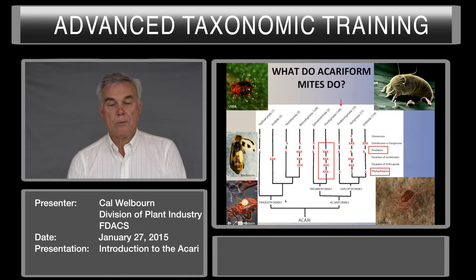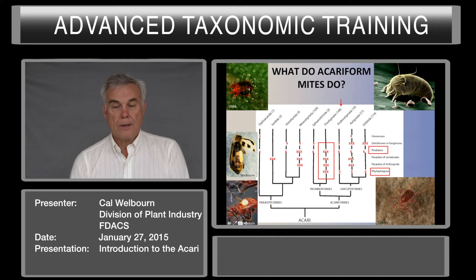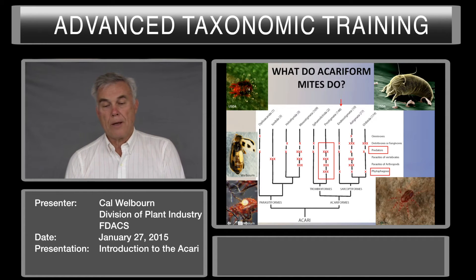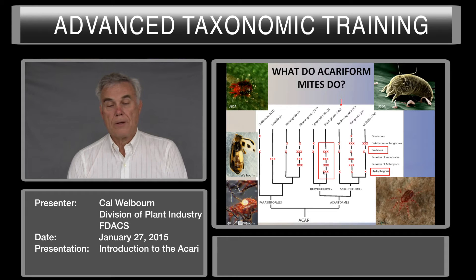What do acariformes do? There are some that are omnivores. Many are detritivores and fungivores. Some are predators, but when we get to the Prostigmata, there are a lot of predators. Some are parasites of vertebrates and parasites of arthropods. Some of the Astigmata are parasites of arthropods and vertebrates. In Prostigmata, we have a lot of parasites of vertebrates and arthropods. More importantly, the phytophagous mites — there are a few in the oribatids, but most important phytophagous mites are in the Prostigmata.